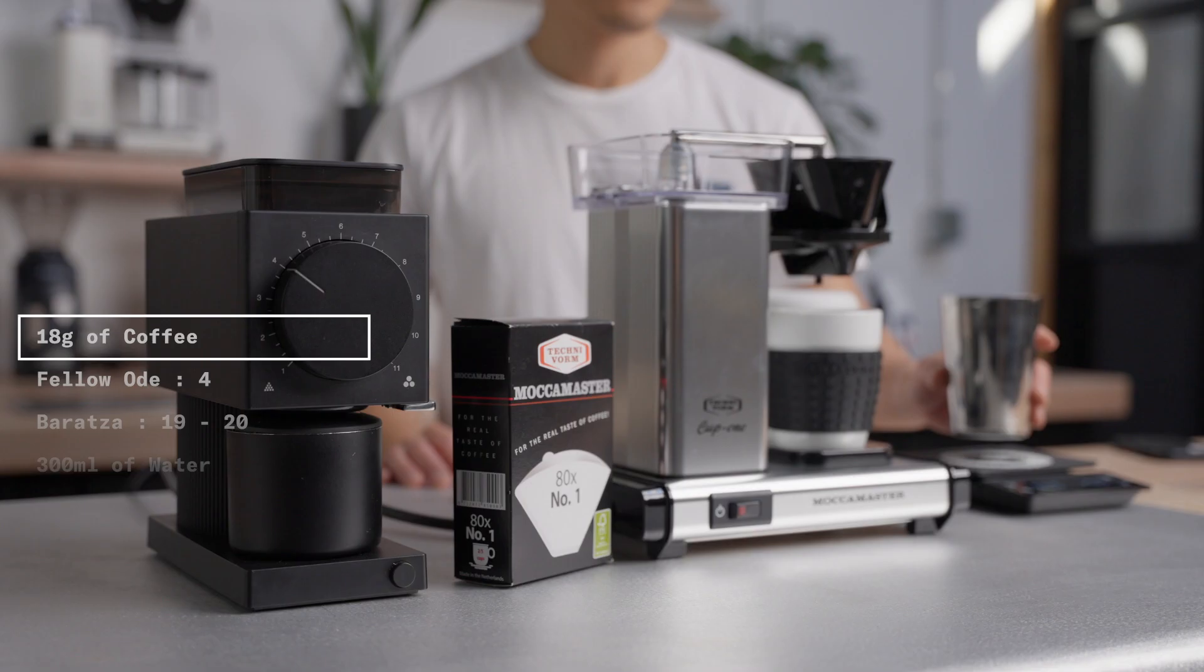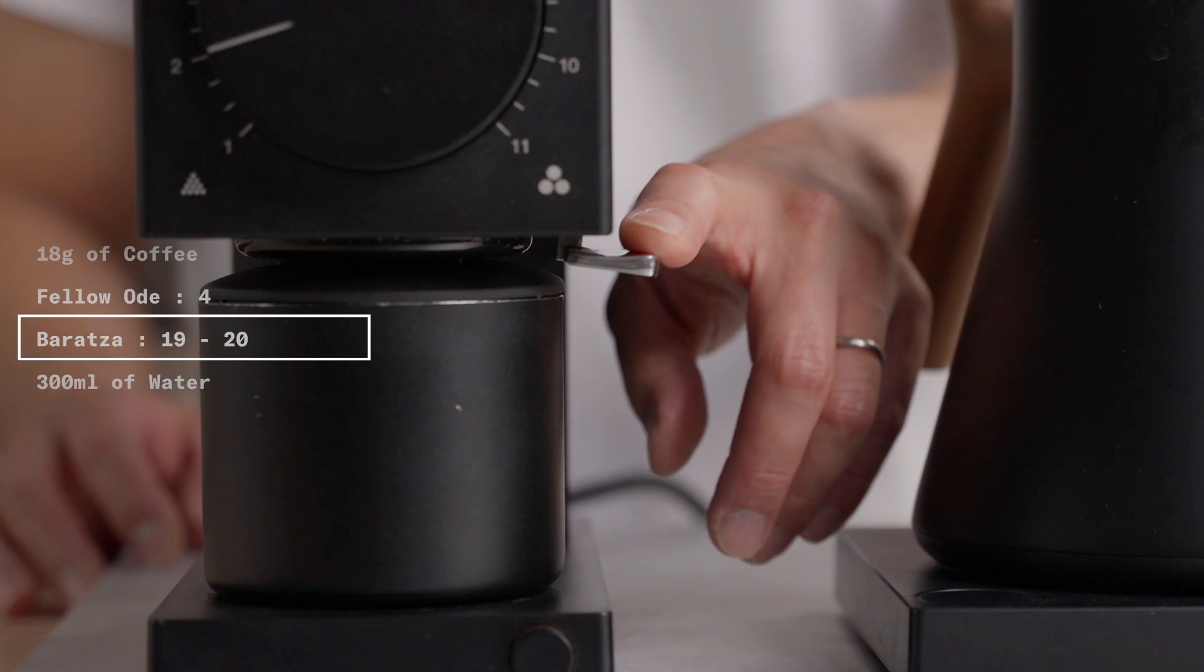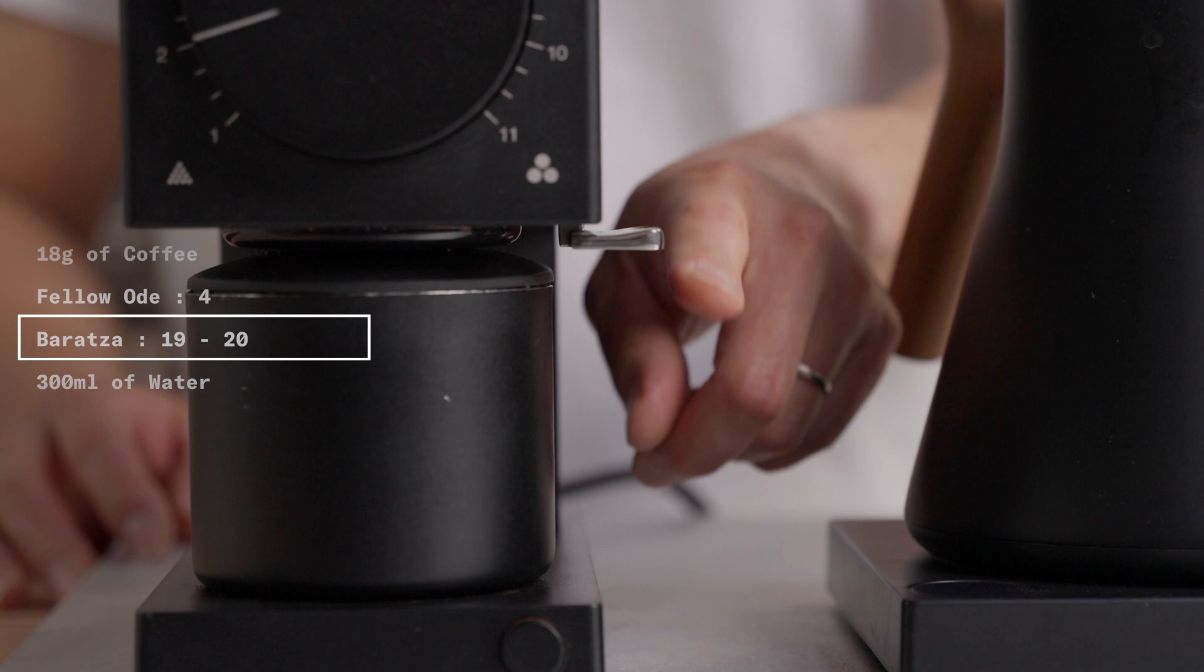Our recommended grind settings are 4 on the Fellow Ode or number 19-20 on Baratza products. If you have a different grinder, you can find the manufacturer's recommended grind settings on our blog.